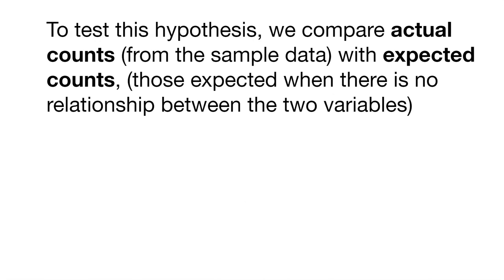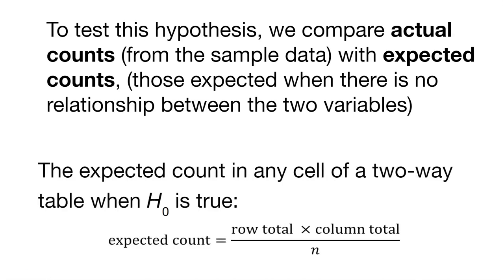To test this hypothesis, we compare the actual counts from the sample data with the expected counts — those we expect when there's no relationship between the two variables. This sets up our hypothesis test using categorical data. The expected count in any cell of a two-way table equals the row total times the column total divided by n. We'll talk about what this means for the deer hunter data set in a bit.